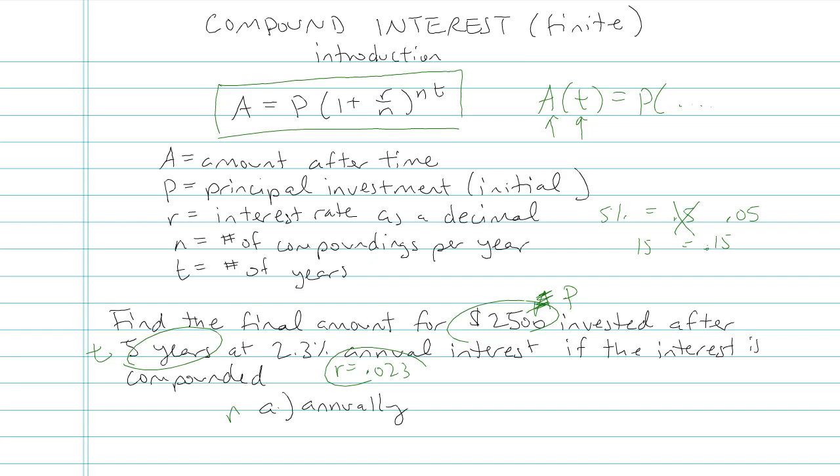Okay. So we're trying to find the amount after time. That's A. Our principal amount for all of these is going to be $2,500. So they're all going to start at the same. Amount after time is equal to $2,500 times something in parentheses.